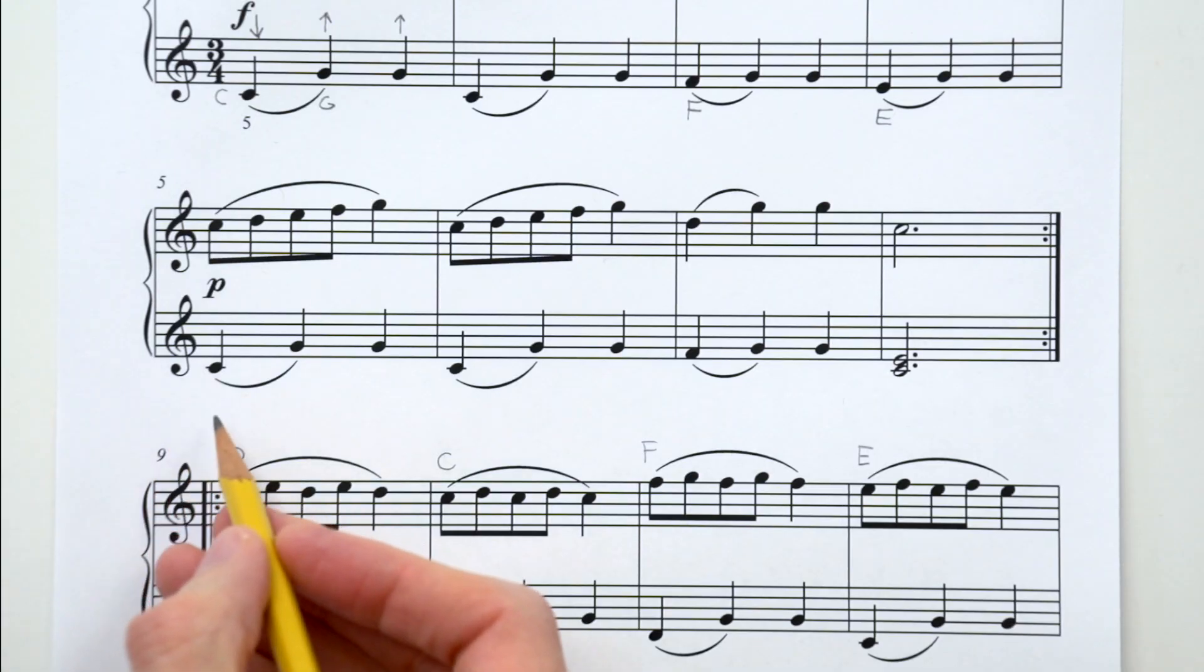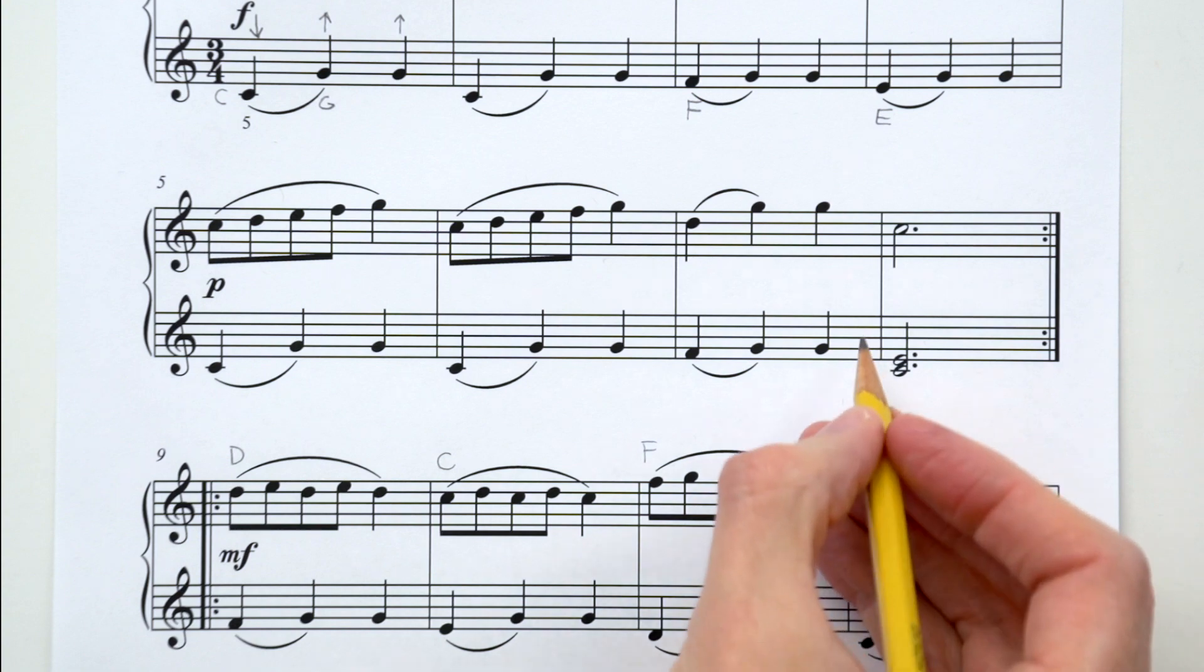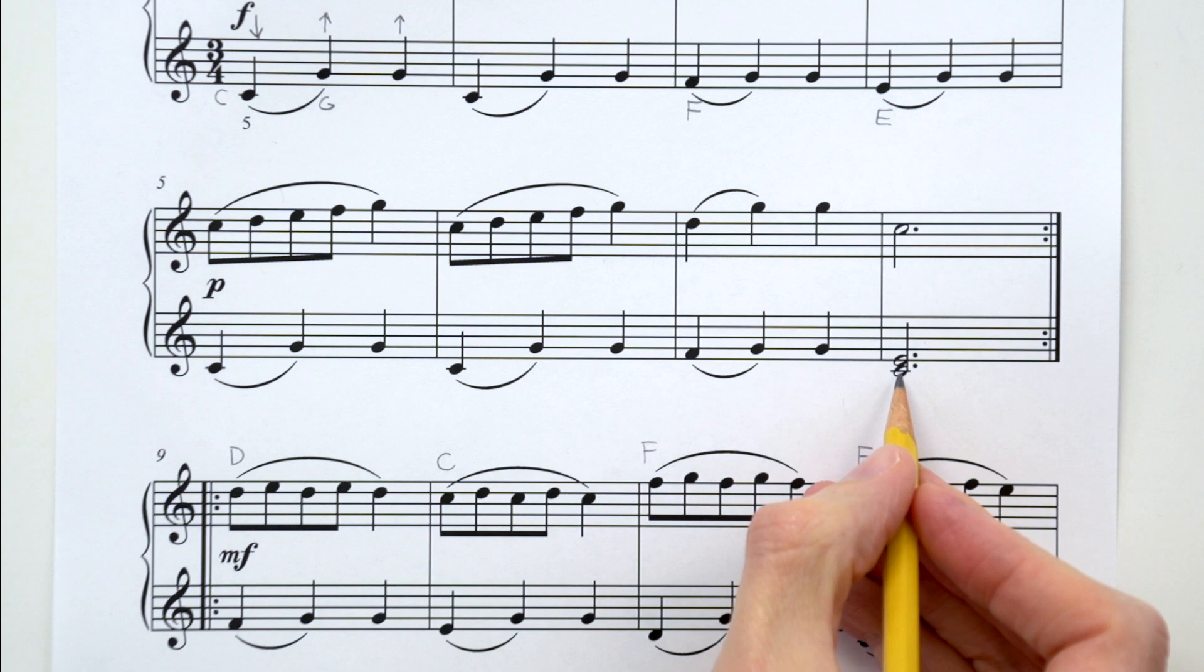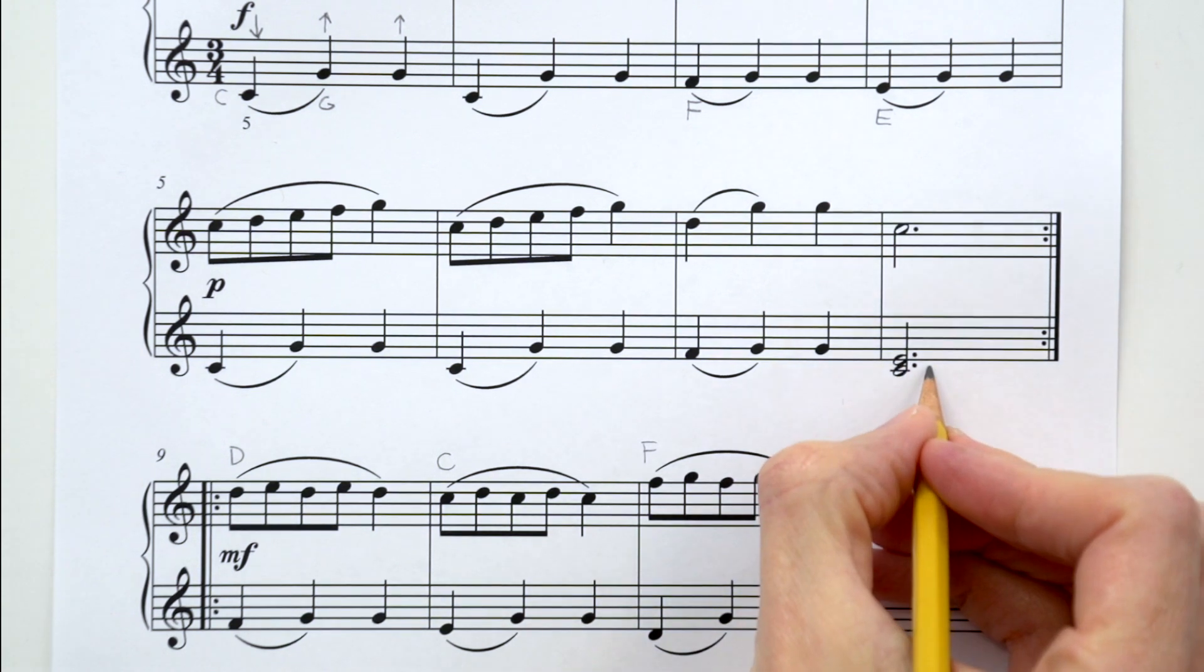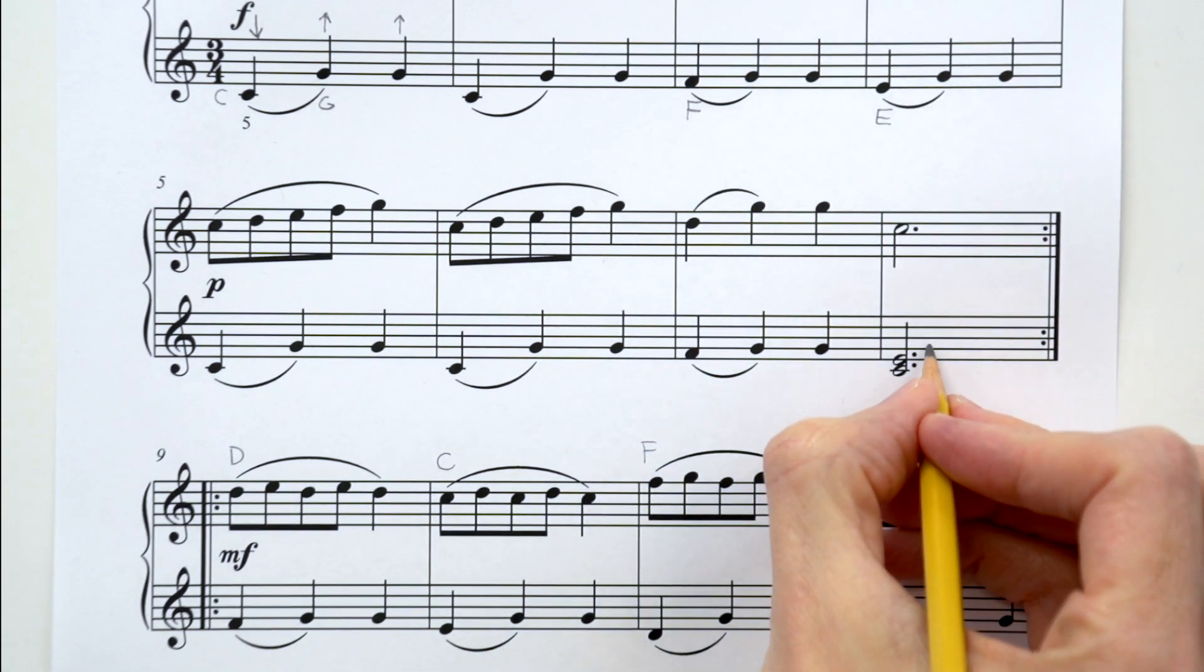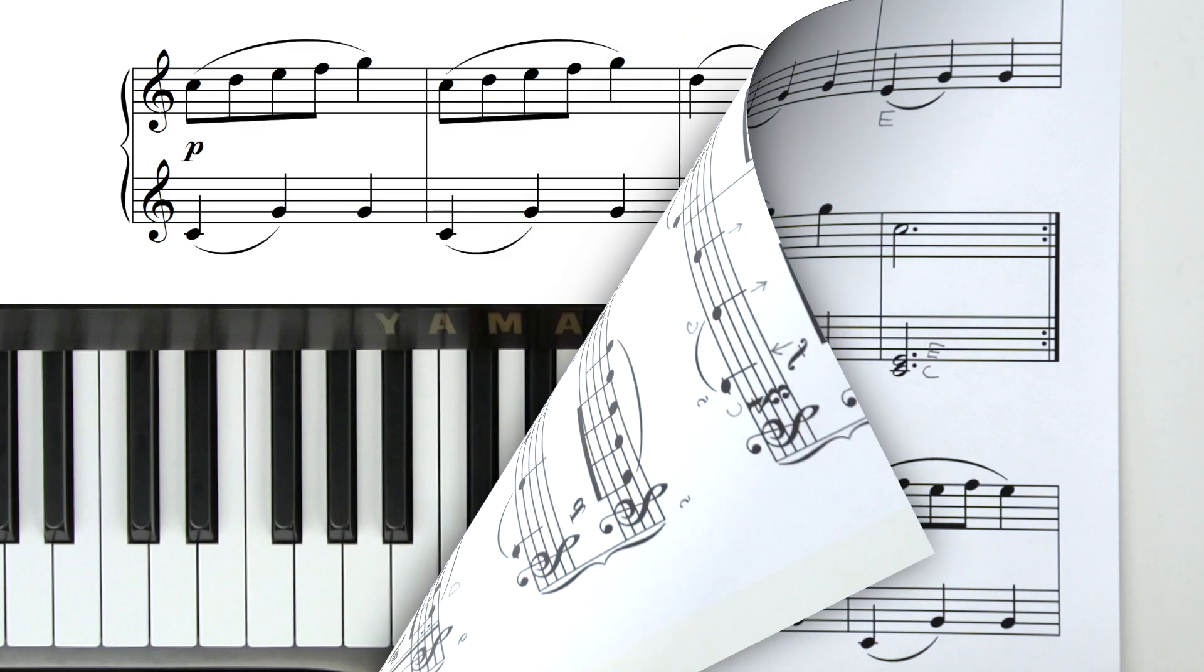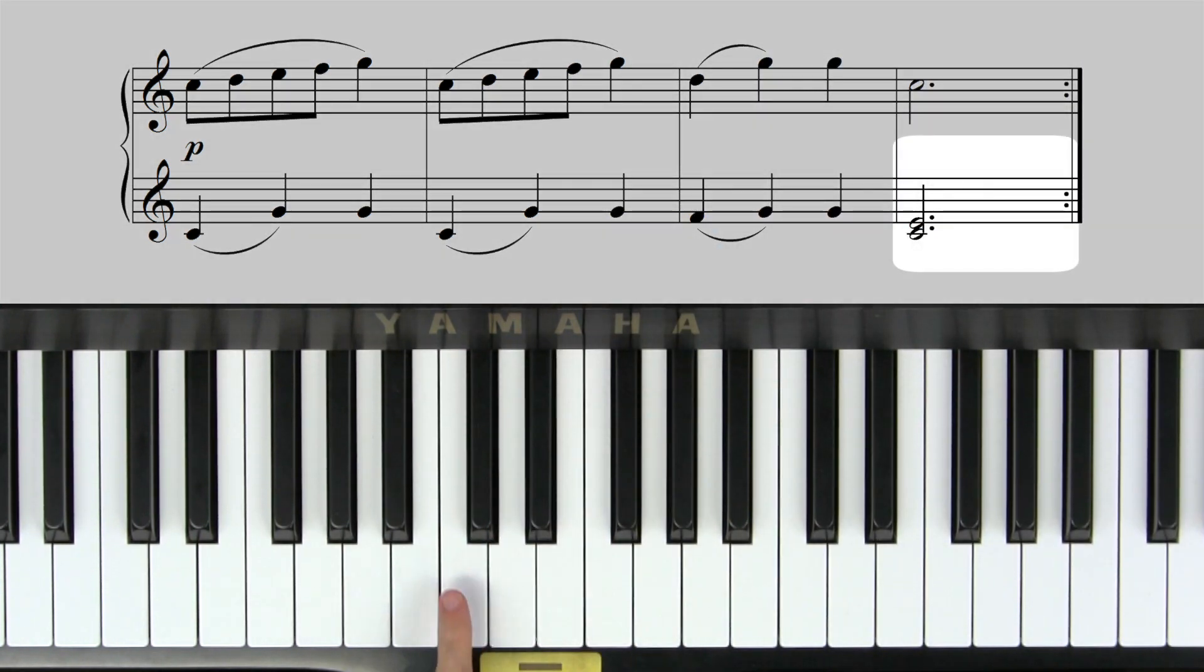All right, time to check out line two. Can you tell me what's different on line two compared to line one? Point to it. Now if you're pointing right here, you're correct. This is the only spot that's different from line one for the left hand. We have a little chord here. This bottom note is middle C, and the top note of the chord is what? If you said E, you're correct. We have a little C and E chord. Let's try line two on the piano.